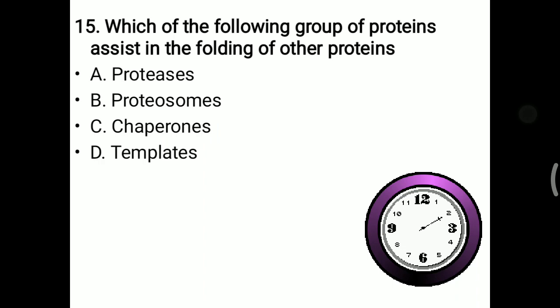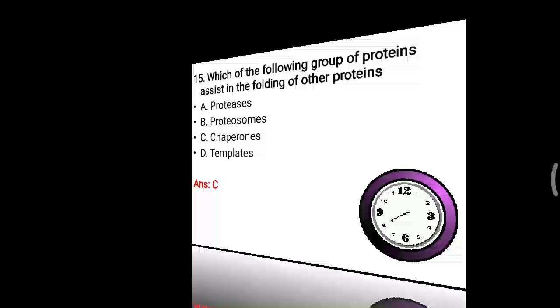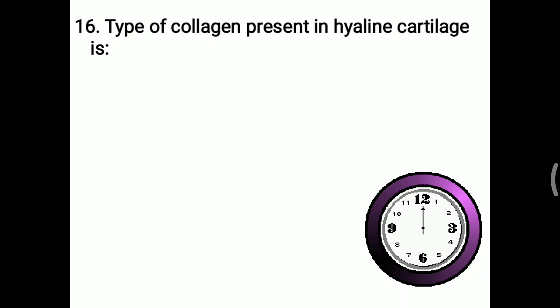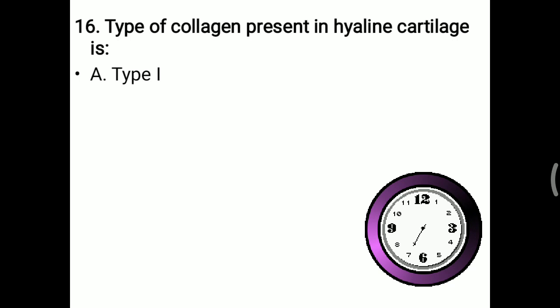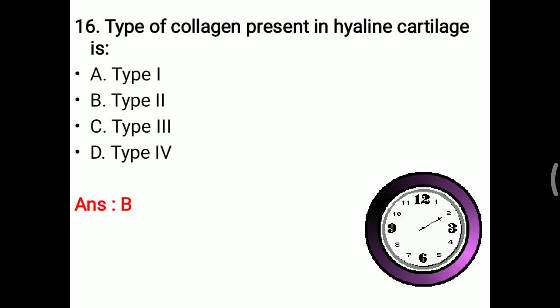Next question: type of collagen present in hyaline cartilage. There are more than 15 types of collagen in the body, present in different tissues. Options: type 1, type 2, type 3, or type 4. Type 2 collagen is mostly present in hyaline cartilage. The right answer is B — type 2 collagen.